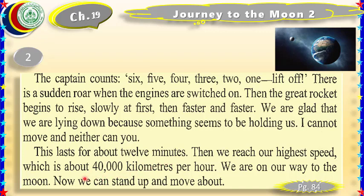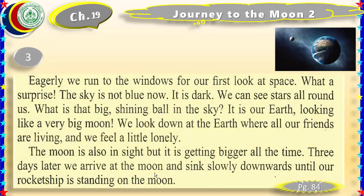I cannot move and neither can you. This lasts for about 12 minutes. Then we reach our highest speed, which is about 40,000 kilometers per hour. Now we can stand up and move about. We can see stars all around us. What is that big shining ball in the sky? It is our earth, looking like a very big moon. We look down at the earth where all our friends are living, and we feel a little lonely. Three days later we arrive at the moon and sink slowly downwards until our rocket ship is standing on the moon.